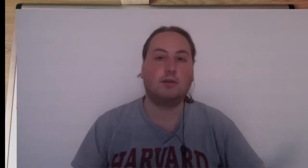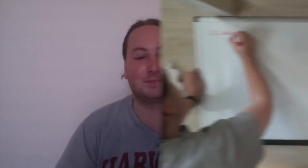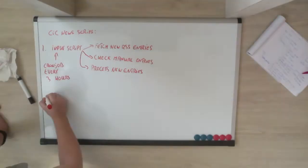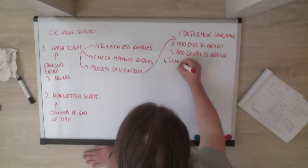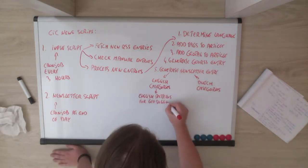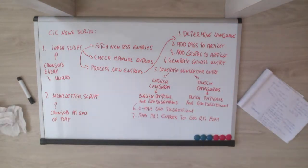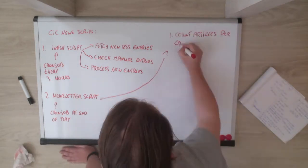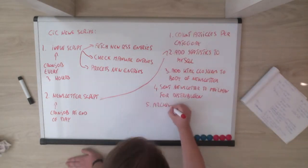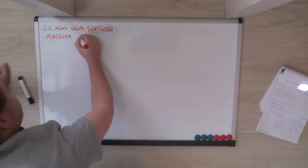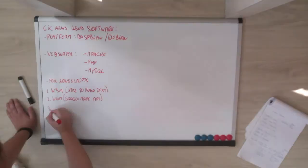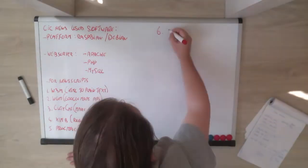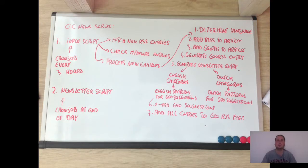All the articles are stored in a MySQL database. Now let's have a better look at the system. As you can see, the news engine has two main scripts: the input script and a newsletter script. Both run via cron job.